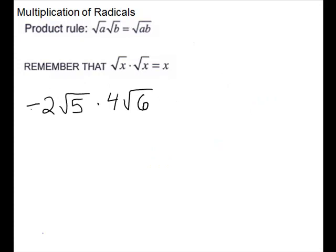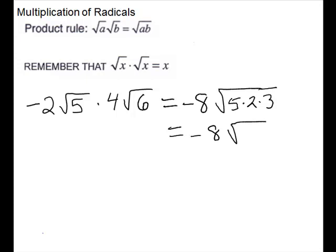For this problem, we will need to multiply the numbers on the outside of the radical and the numbers underneath the radical. Negative 2 times 4 will give us negative 8, and underneath the radical we have 5 times 6 is 30. We could try breaking that 6 down to 2 times 3, but we didn't get anything that simplified, so we leave it as 30. That's our simplified answer.